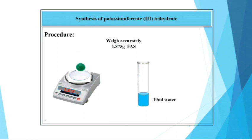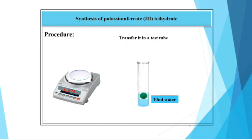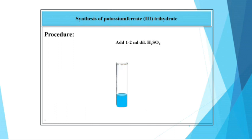Step 1: Weigh accurately 1.875 gram of ferrous ammonium sulfate crystals and take 10 ml distilled water in a test tube. To this 10 ml distilled water, add ferrous ammonium sulfate crystal and stir it well.